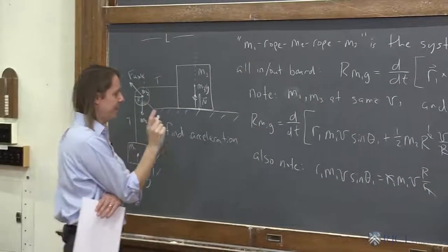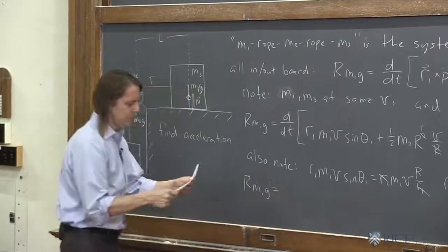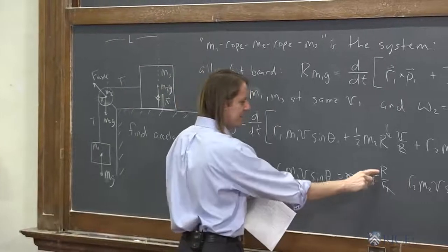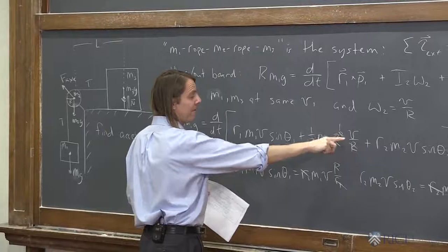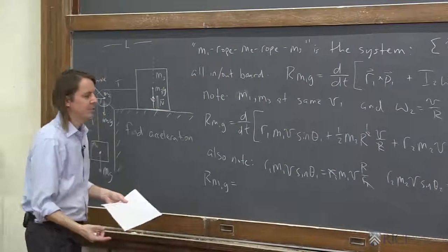So then we see that the torque M1 G is equal to DDT of basically this big R M1 V plus 1 half M R V plus big R M2 V. So let's take the time derivative of each one of those.